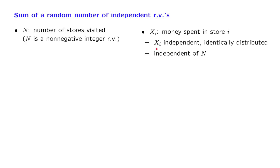We also make the assumption that the Xi's are independent of capital N. This means that no matter how many stores you visit, the amount of money you spend in each one of the stores is a random variable drawn from a common distribution, which does not change no matter what capital N is. With these assumptions in place, let us focus on the total amount of money that you are spending — the sum of random variables with the extra twist that the index goes up to capital N, which is itself a random variable.